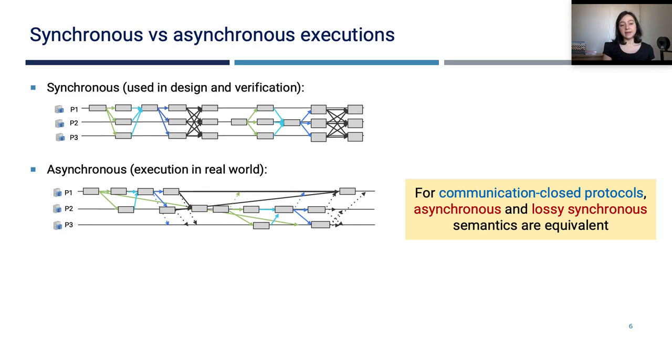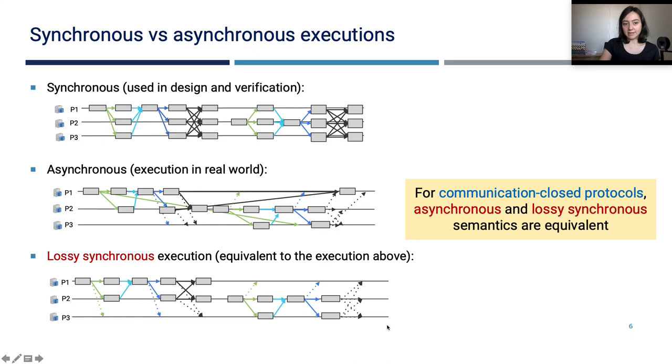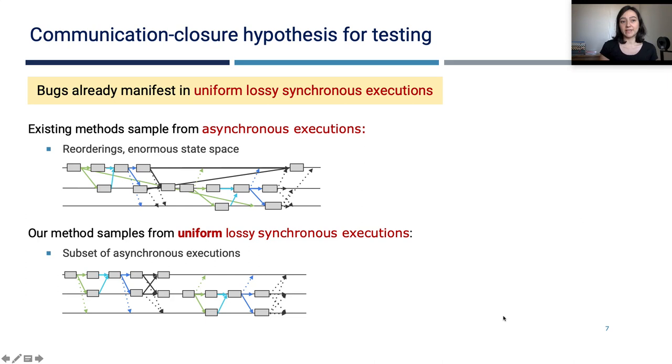There is a nice indistinguishability result from the verification domain, which says that for communication closed protocols, asynchronous and lossy synchronous semantics are equivalent. So lossy synchronous executions are synchronous executions where some messages, you see with these dotted arrows here, are dropped. Based on this result, we formulate the communication closure hypothesis for testing, and we say that bugs already manifest in uniform lossy synchronous executions. So existing methods sample from the set of all asynchronous executions, the enormous state space of all reorderings, and our method samples from uniform lossy synchronous executions.